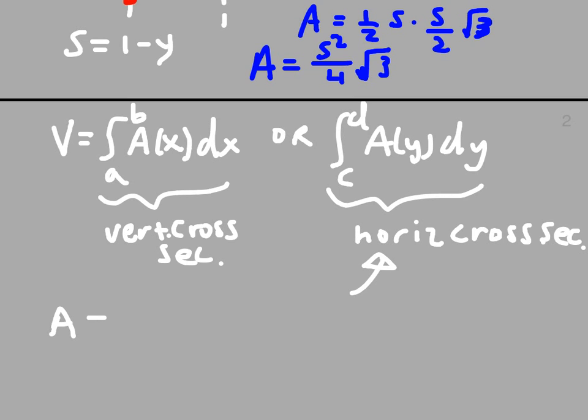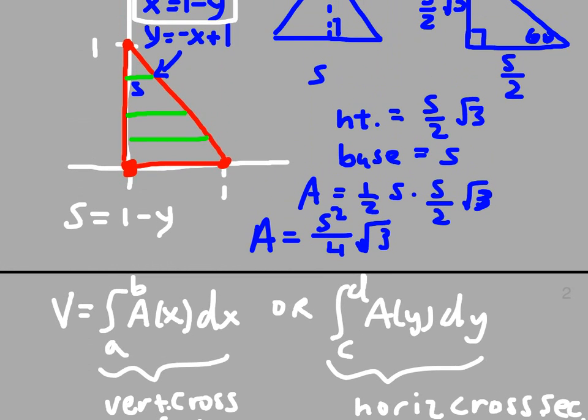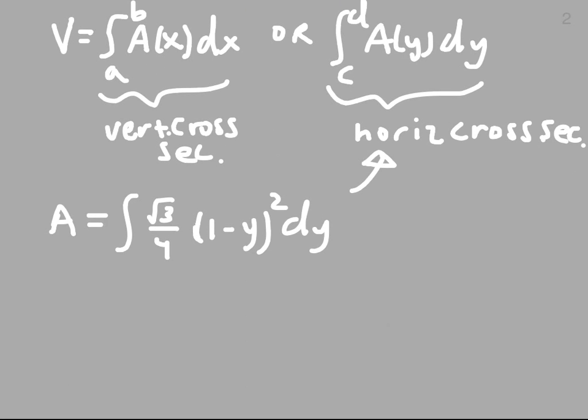We have that area, then, is the integral—we'll figure out the limits of integration in a second—root 3 over 4, 1 minus Y, quantity squared, DY. How about the limits of integration? Go back to the picture. These get moved vertically upward from a low point of Y equals 0 to a high point of Y equals 1. Low point is Y equals 0, the high point is Y equals 1. So, that's the limits of integration, 0 to 1.